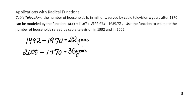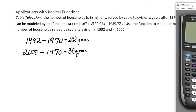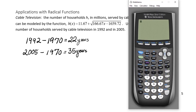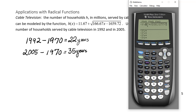Let's go ahead and get our calculator, turn it on, go to Y equals and enter in our function: 11.67 plus the square root of 166.67X minus 1659.72.